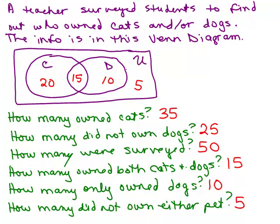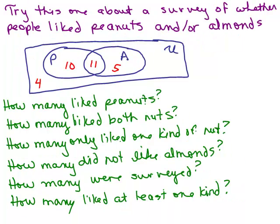This example had just two questions in the survey — about cats and dogs. You could also include fish as a third option. Let's go on to a problem where we have two kinds of nuts: peanuts and almonds — a little survey about who liked peanuts and/or almonds. Put the video on pause and try this one on your own.